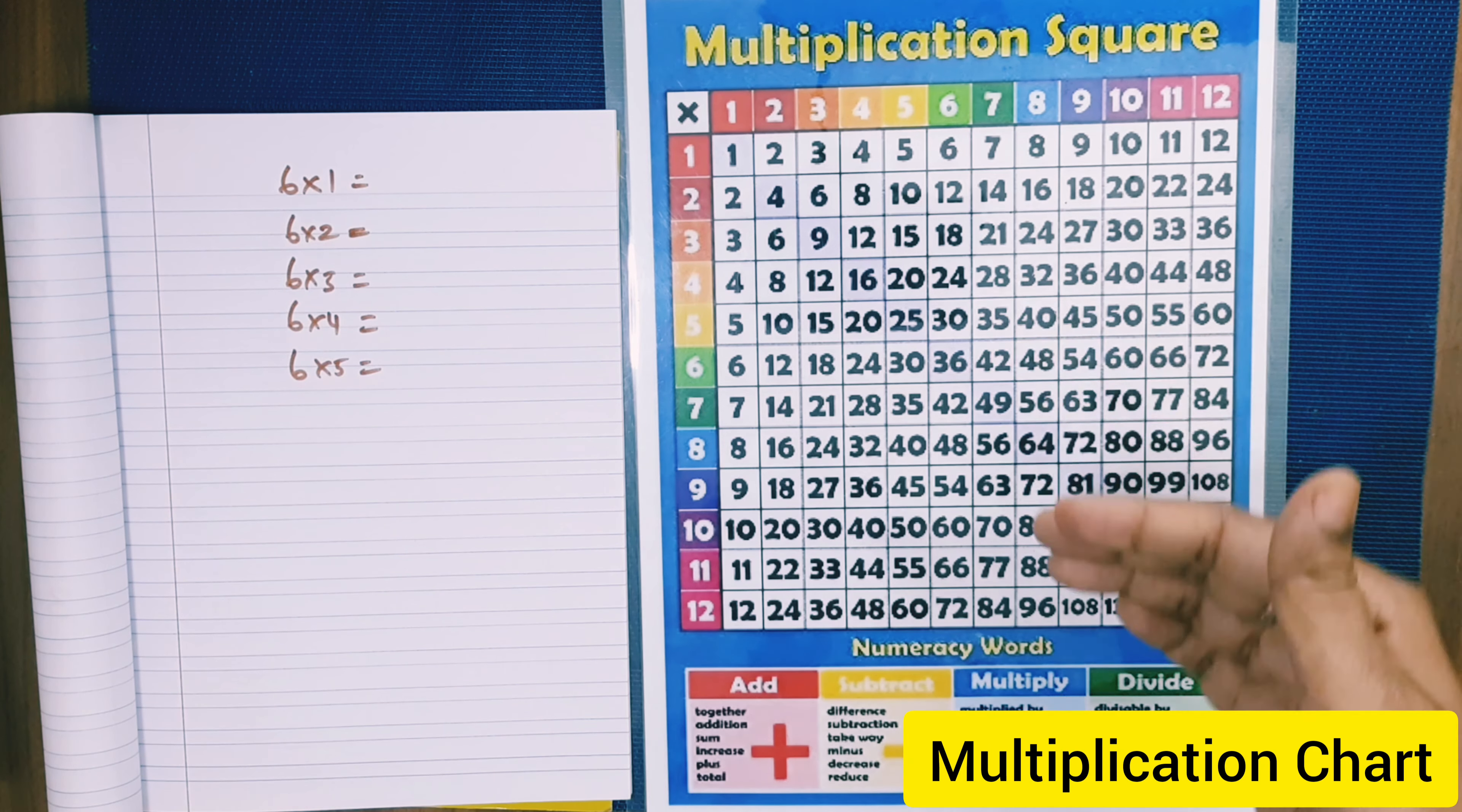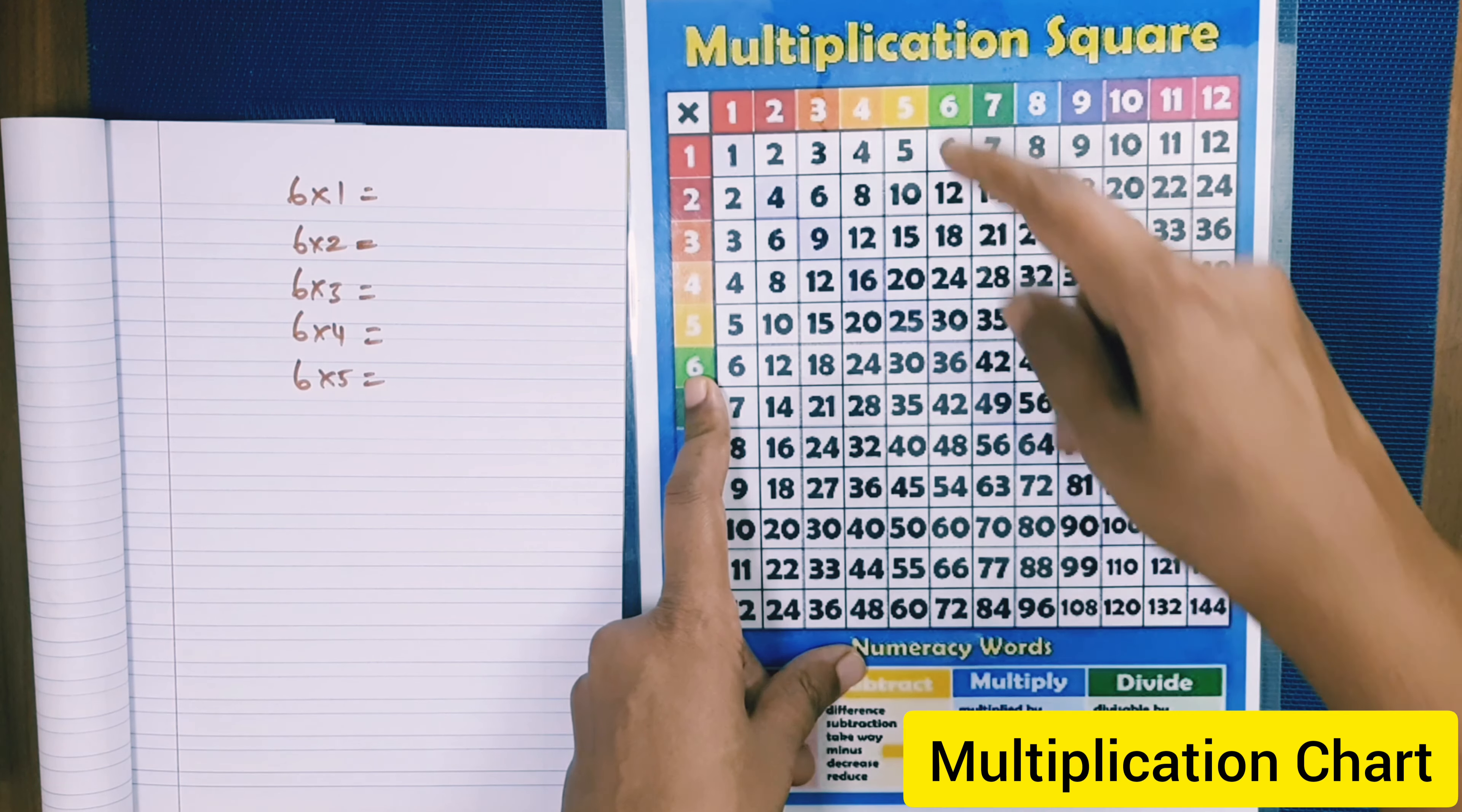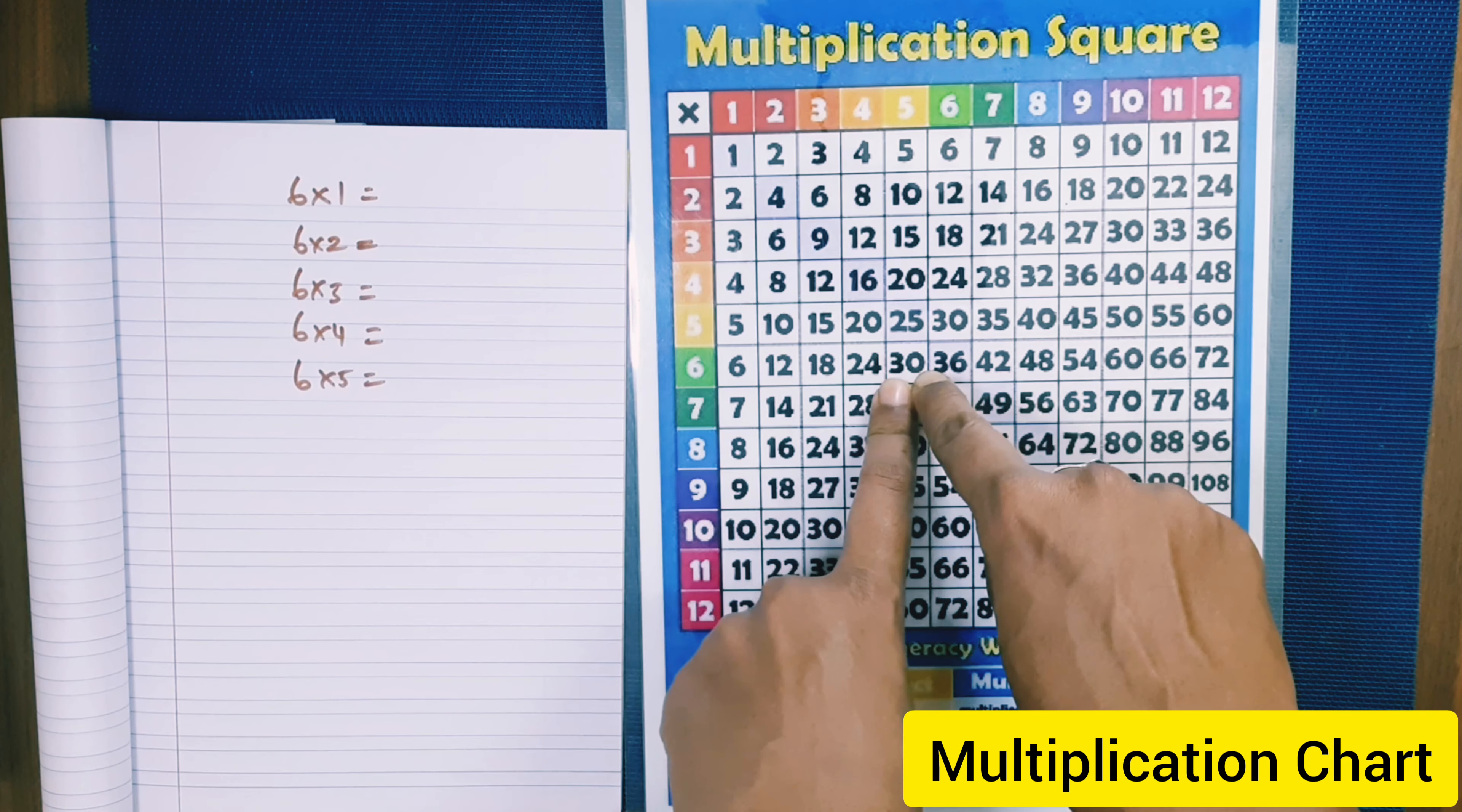Now we will ask the child, first invite the child and say we are going to do multiplication chart today and these are the problems which we are going to solve. Now let us say, let us do 6 multiplied by 5. So show 6 using your left index and 5 using your right index. So 6 left index, 5 using your right index. So the square where they meet shows the result.